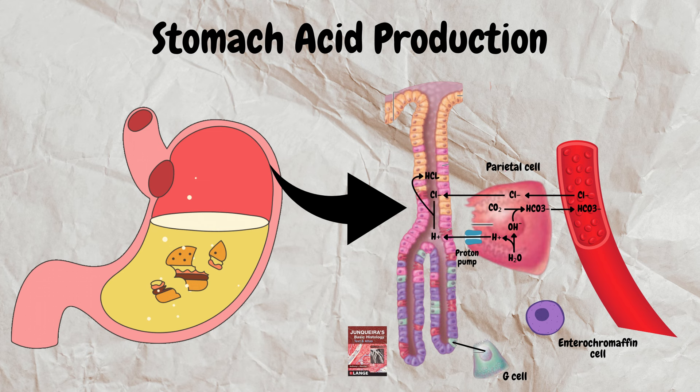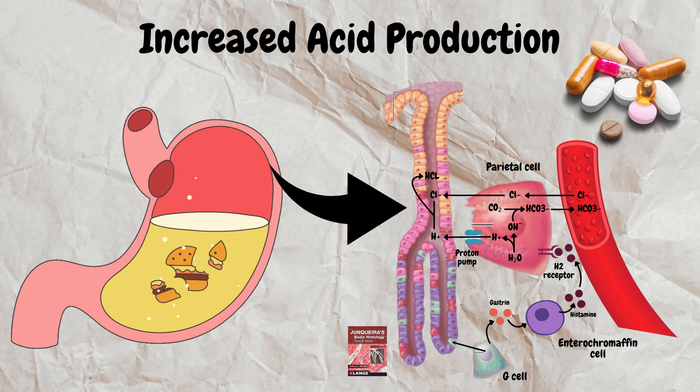The parietal cells have a histamine-2 receptor, also known as the H2 receptor, on the basal side. G cells secrete gastrin, which acts on enterochromaffin cells, which in turn secrete histamine. This histamine binds with the H2 receptor on the parietal cell and stimulates it to produce more acid. Hyperproduction of acid may lead to acid reflux — more acid, more chances of reflux. Certain medications such as NSAIDs also cause more acid production.